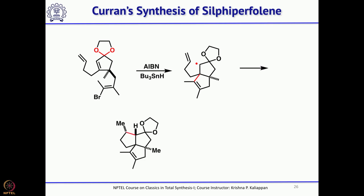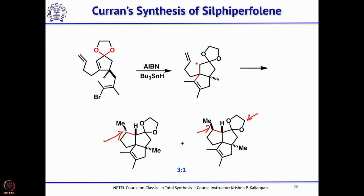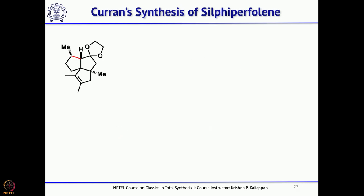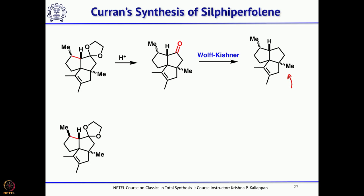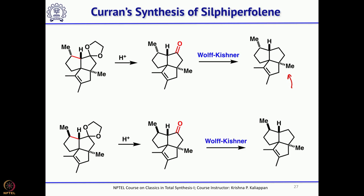The tandem radical cyclization gave a mixture of two diastereomers: the required isomer and an unwanted isomer in a ratio of 3:1 in favor of the required isomer. The ketal was then removed by acid treatment, and the keto group was removed using Wolff-Kishner reduction, completing the total synthesis of sylviperfoline. The epimer was also obtained: removal of the ketal followed by Wolff-Kishner reduction gave epi-sylviperfoline.